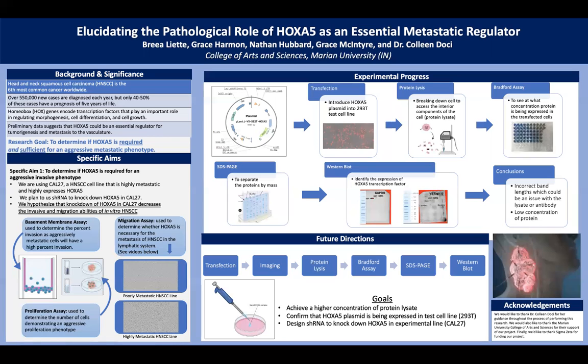Taking this into account, moving forward we're going to focus on achieving a higher concentration of protein lysate in our samples. We will do this by repeating the process from the transfection step, as we already have our plasmid designed and just need to re-transfect it into the 293T cells. After getting good results on a Western blot, we can confidently move on to designing an shRNA to knock down HoxA5 in our experimental cell line, Cal27, and begin testing specific aim 1 by performing the assays described.